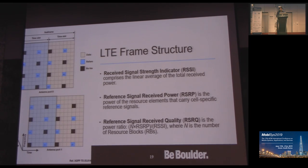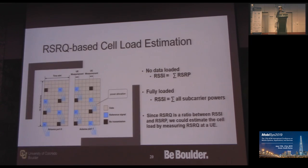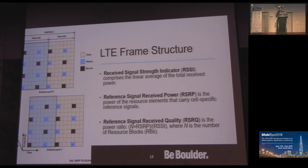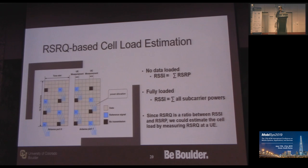To obtain the cell load, we look at the LTE frame structure. The three important factors are RSSI — the received signal strength indicator — RSRP, the reference signal received power, and RSRQ, which is the ratio of RSSI to RSRP. RSSI is the linear average of all received signals, while RSRP indicates the reference signal power. When the cell is fully loaded, RSSI is the summation of all subcarrier powers, not just RSRP. When the cell is lightly loaded — as shown in the blue diagram — RSSI equals just the summation of RSRP. Therefore, RSRQ can be used to measure cell load within the cellular channel.